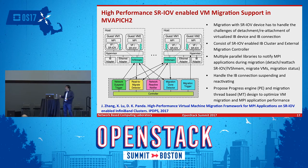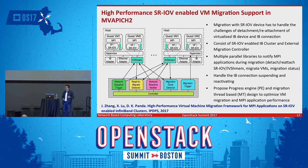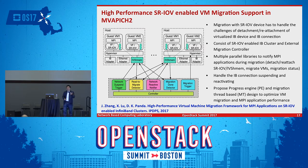Inside the MPI library, upon detecting a migration signal, we drain all in-flight traffic and suspend communication, then notify the controller it is safe to migrate. The controller hot-unplugs the SR-IOV device, migrates the VM to the destination host, hot-plugs the device again, and sends a resume signal. Once the MPI library detects the resume signal, it re-establishes connections, properly handling all InfiniBand state including endpoints, queue pairs, and context information. This solution works with any hypervisor and any driver.